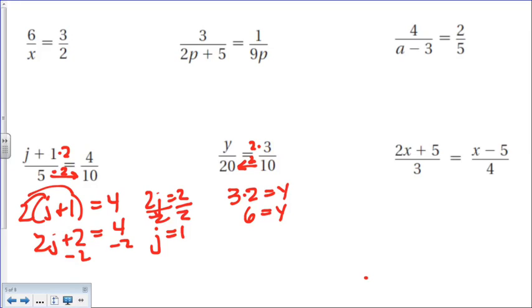If you cross-multiplied, you would have got 10y equals 60 divided by 10, y equals 6. You would have got the same answer, but see how much easier it is just to kind of look at the problems and see what we need to do, okay?